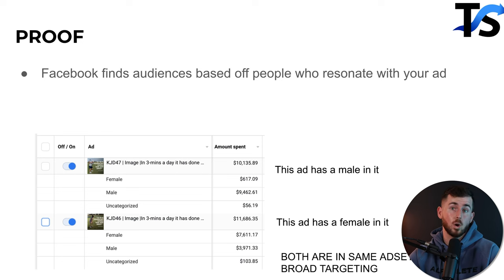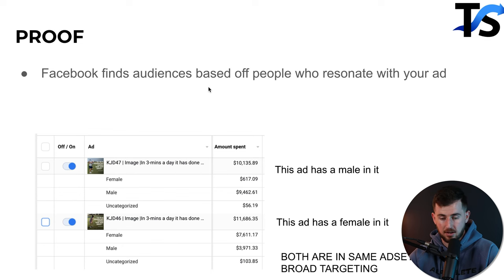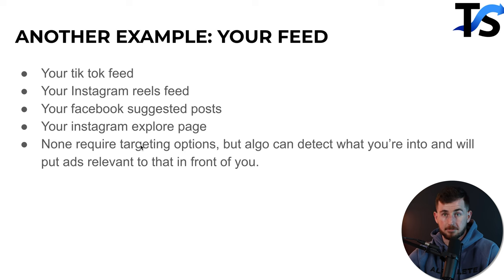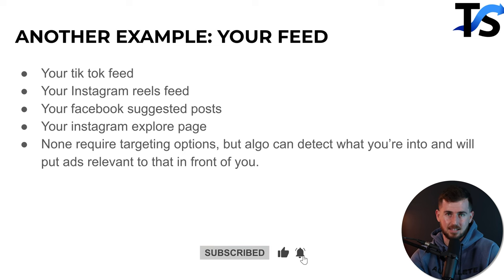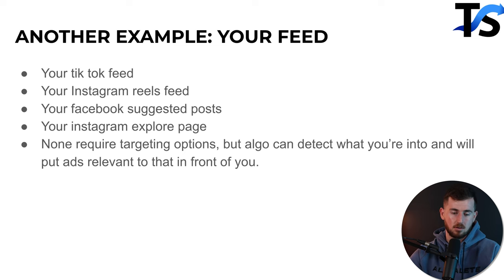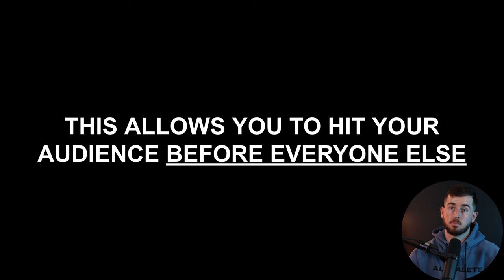This is where you need to understand human psychology. What gets people to stop? The visual and the headline — what's written directly on the creative. It needs to be emotion-baiting. What's going to grab their attention and strike emotion? For example, your Instagram or TikTok feed fills up based on what you click. There are no specific targeting options when you upload organic content. Similarly, with broad targeting your ad can hit your ideal audience before they're even categorized as an interest.